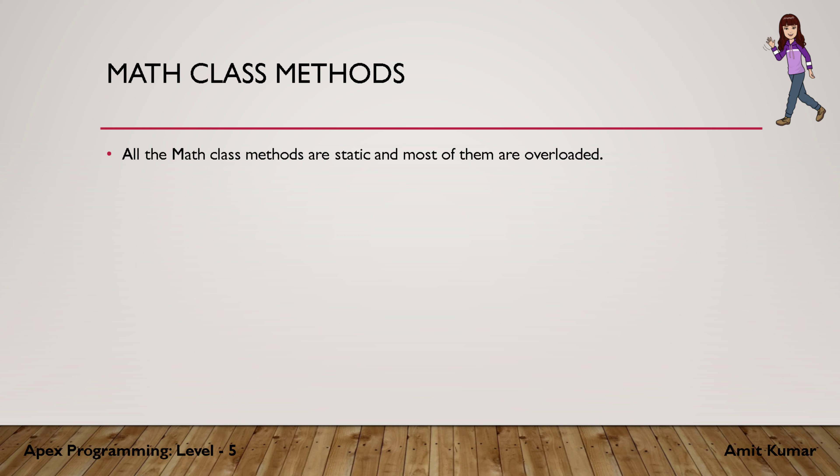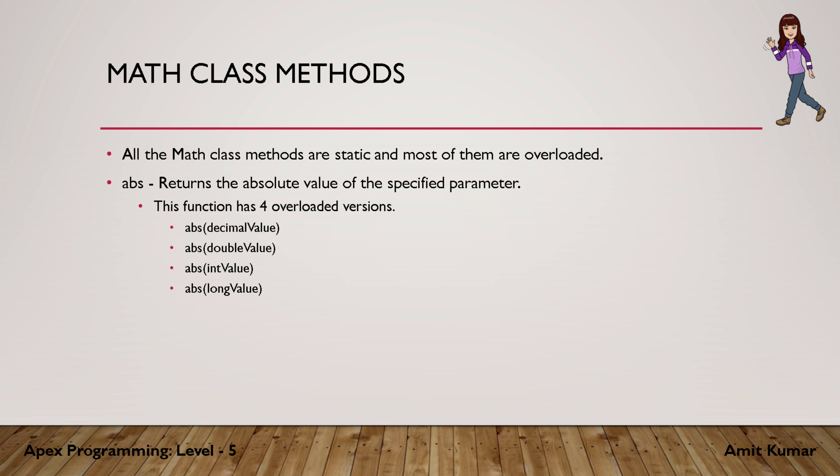One of the methods is abs, or absolute, and it returns the absolute value of the specified parameter. The absolute value of any number is the positive value of it — for example, absolute value of minus 4 is 4, and 4 is also 4. It has four overloaded versions where we can pass decimal, double, integer, or long.